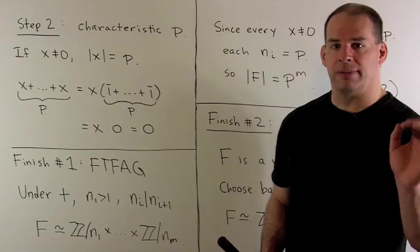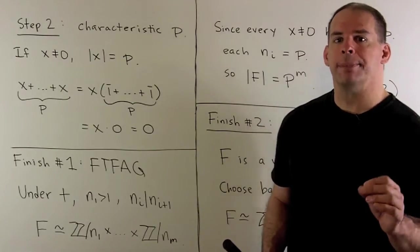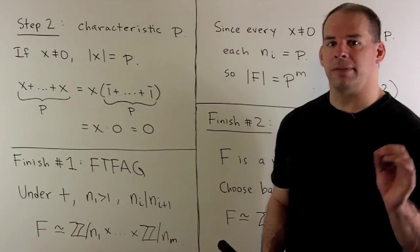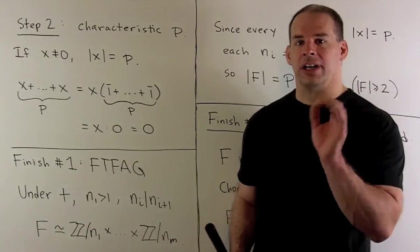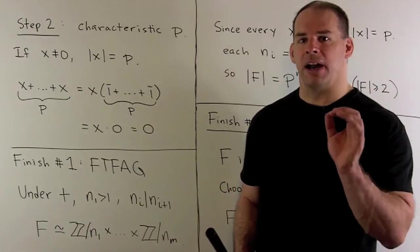Now, we have two ways we can finish. First way, we'll pull out the fundamental theorem of finite abelian groups. Now, under addition, F is a finite abelian group.